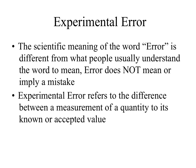When talking about experimental error, error does not imply a mistake. So what is experimental error? Experimental error refers to the difference between a measurement of a quantity and its known or accepted value. It's the difference between what you measured and what really is there.